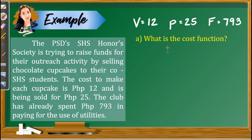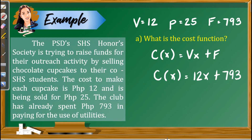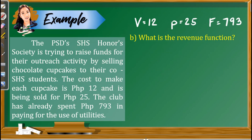Letter A: What is the cost function? Based on our discussion, the cost function is C(x) = vx + F. Here x stands for the number of cupcakes. Substituting, we have C(x) = 12x + 793. This is the cost function.